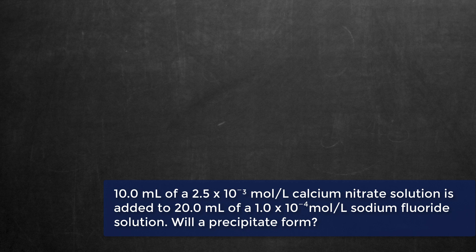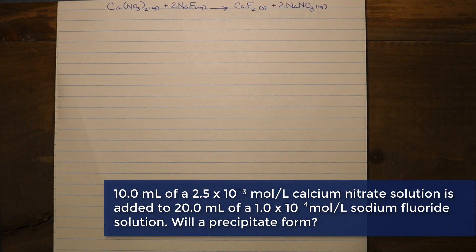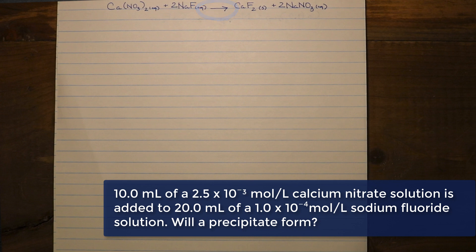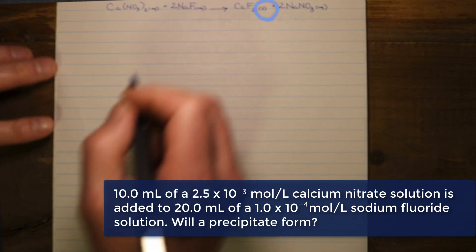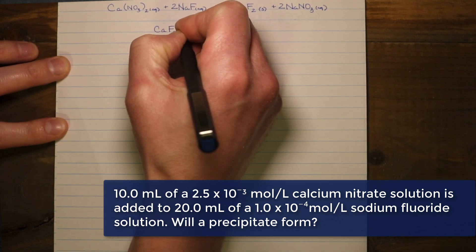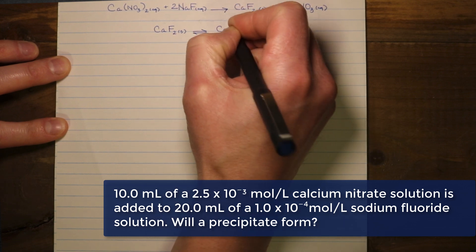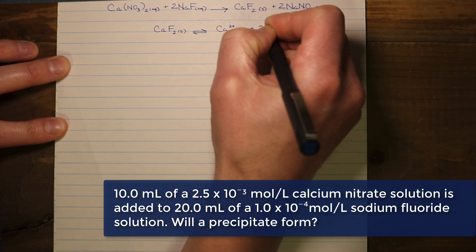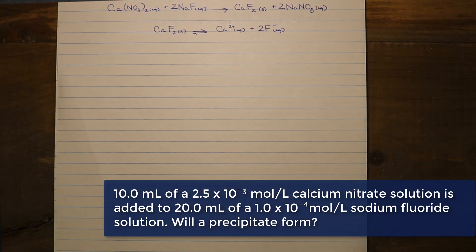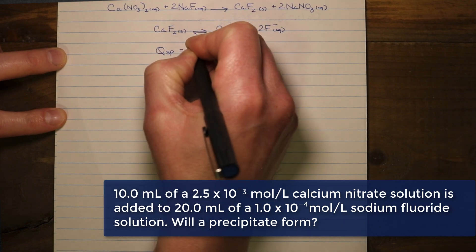The first thing we need to do, like with just about every other type of equilibrium problem, is start with a balanced chemical equation. You'll notice it has a unidirectional arrow — this isn't where the equilibrium lies. This arrow indicates that the two aqueous solutions dissociate into ions completely, and the mixture of those ions could potentially form a solid — in this case, calcium fluoride. So calcium fluoride is our potential precipitate, and this is where our equilibrium expression starts.